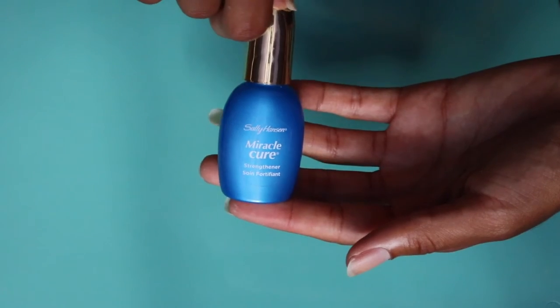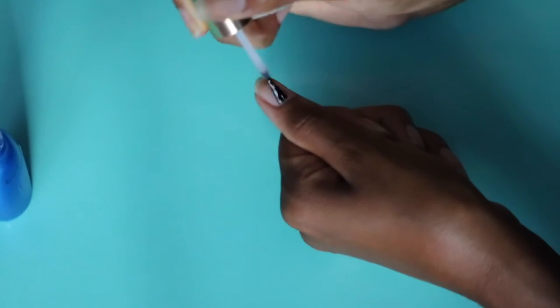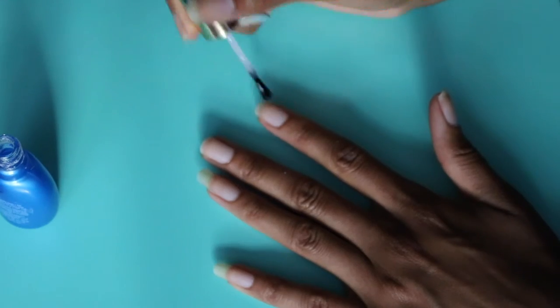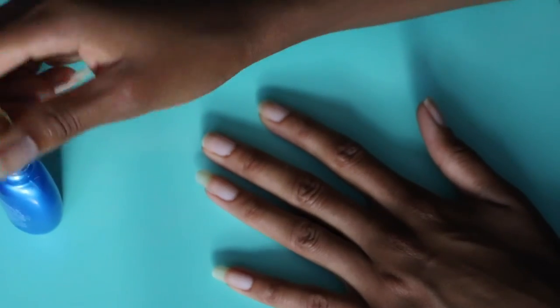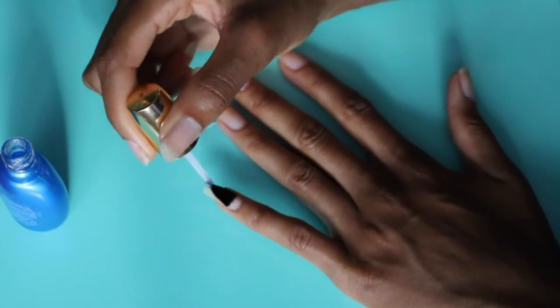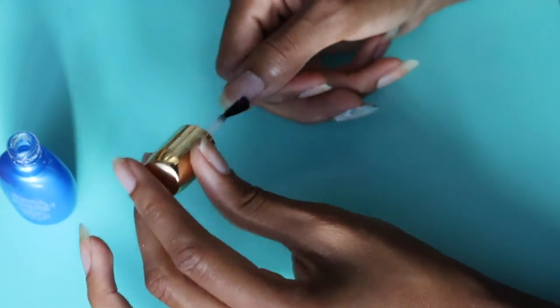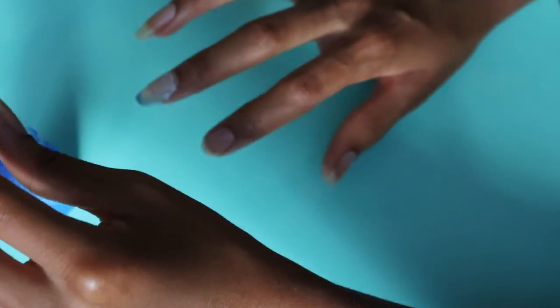So now I use the Sally Hansen Miracle Cure as a base coat because Isabella DeMarco recommended it. But now I use the Butter London base coat that my mom got from TJ Maxx, and that works really well too. This was filmed a long time ago and I'm voicing this over a lot later.